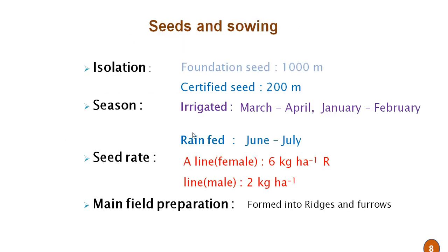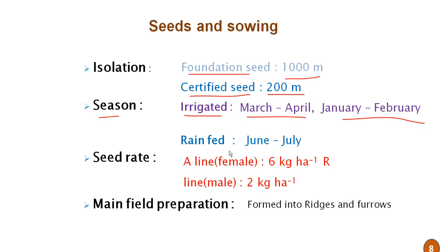Seeds and sowing: isolation required for foundation seed is 1000 meters and for certified seed it is 200 meters. The season for irrigated crop is March to April and January to February; for rainfed it is June to July. The seed rate for the A line (female line) is 6 kg per hectare, and for the R line (male line) it is 2 kg per hectare.